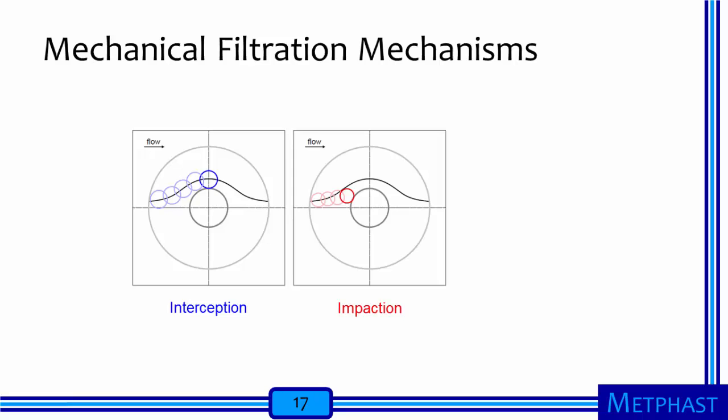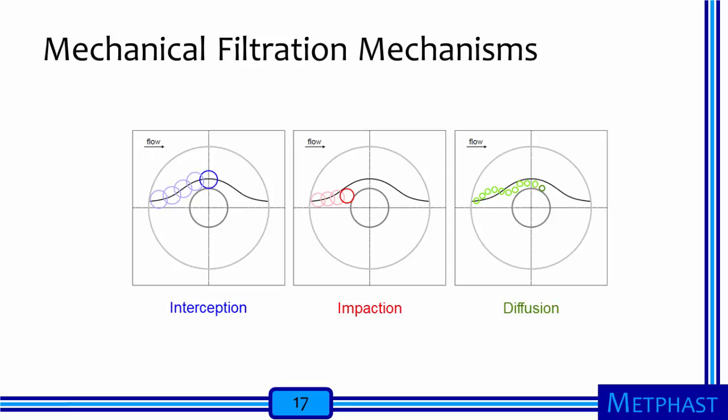The second mechanism, impaction, relies on the inertia of particles. Particles that are relatively large and/or heavy will deviate from air streamlines, especially if the velocity through the filter is high. The particle deviates from the air streamline and impacts on the forward surface of the fiber — sometimes referred to as inertial impaction. The third mechanical filtration mechanism is diffusion. A small particle will have difficulty following an air streamline because it wanders away from the streamline due to Brownian motion. If the particle moves far enough in the right direction, it may impact the fiber surface and be captured.